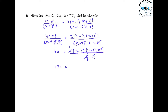(n minus 1) multiplied by (n plus 1) is n squared minus 1, using the identity (a minus b)(a plus b) equals a squared minus b squared. So we have n squared equals 121, meaning n equals the square root of 121, which is 11. As n must always be positive, we do not consider the negative value.